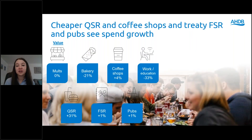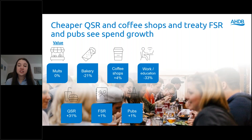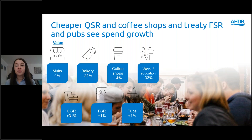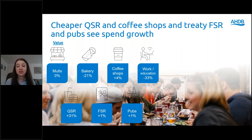Looking at which channels are in value growth in food service compared to pre-COVID, the cheaper quick service restaurants and coffee shops are performing the best, and the treat higher-end food service restaurants and pubs are also seeing growth. What we're seeing is that squeezed middle ground, such as the major multiples and sandwich and bakery. Work and education are still considerably below pre-COVID levels. Value growth in all areas is coming through from an increase in average price, except for quick service restaurants which see an increase in trips compared to pre-COVID, generally through takeaways.